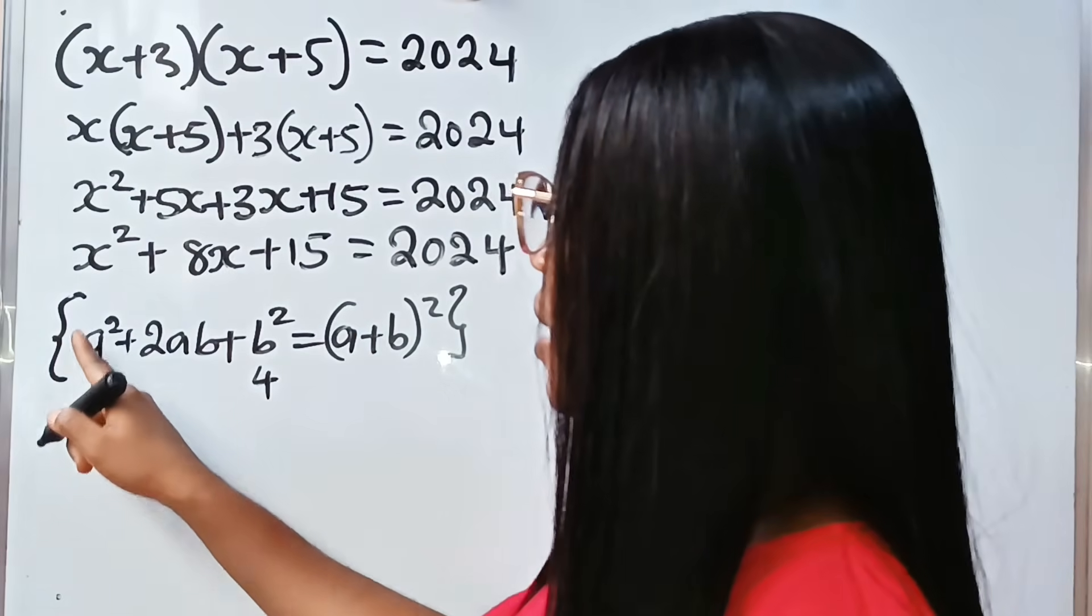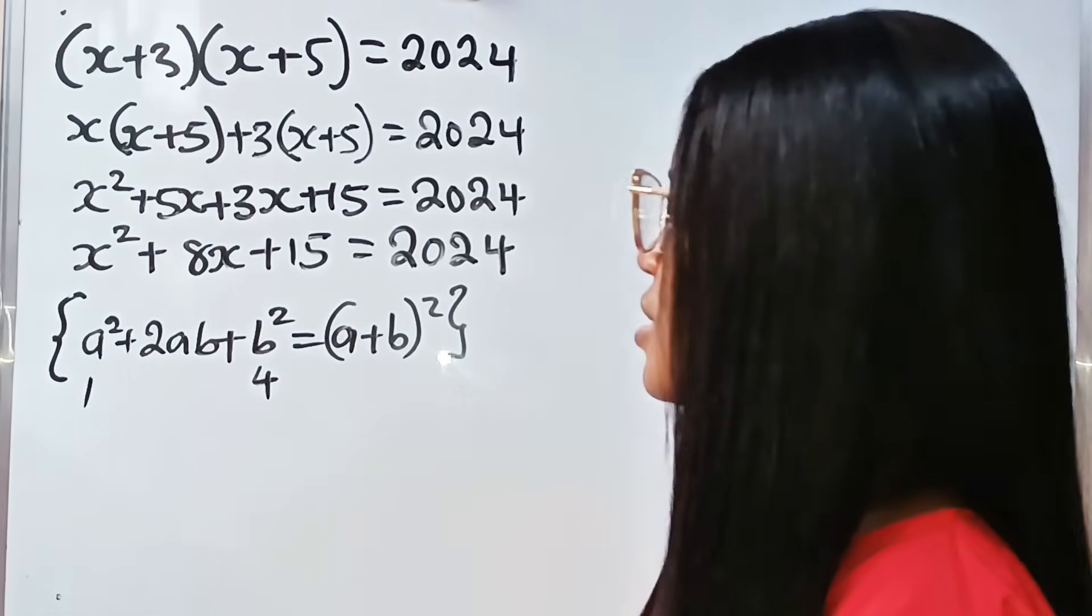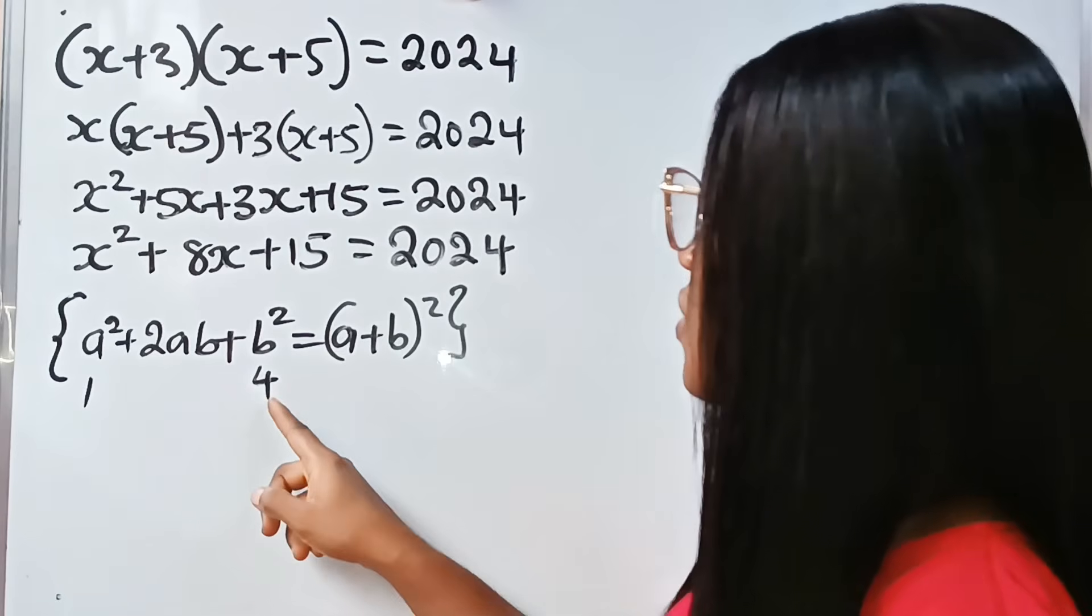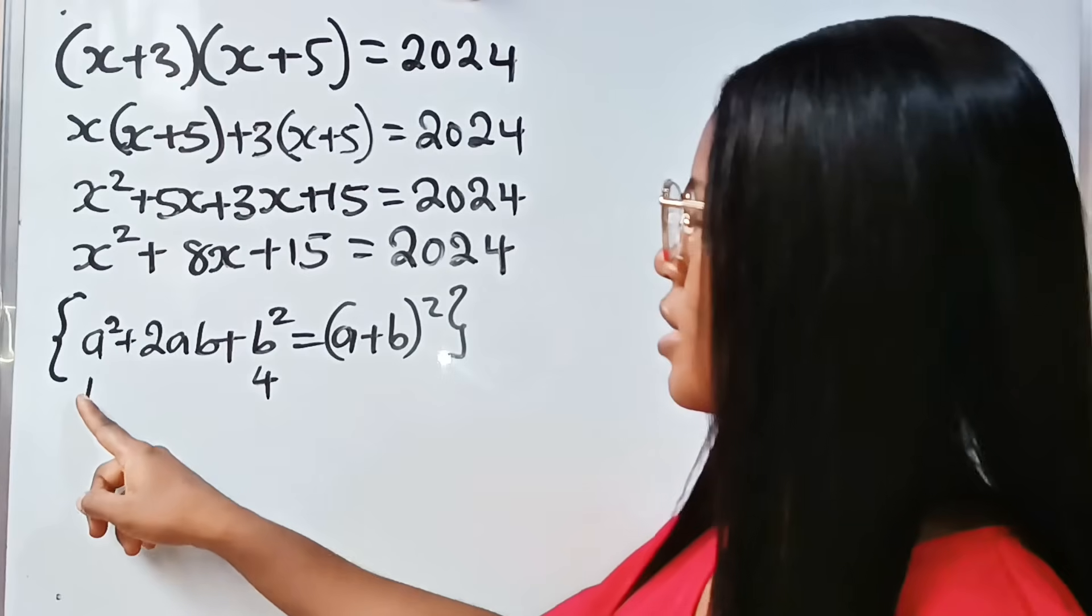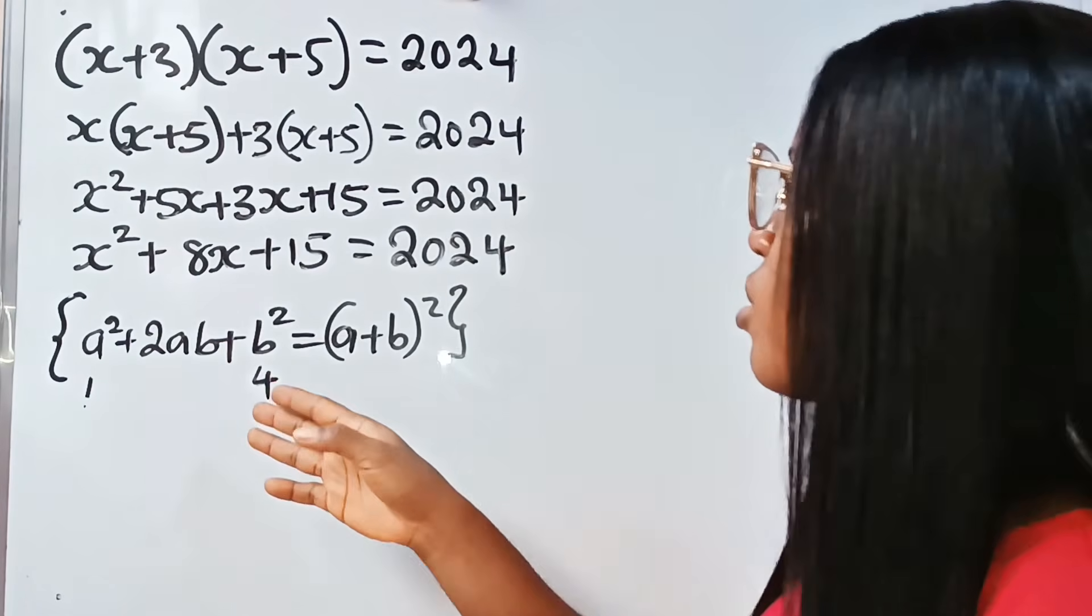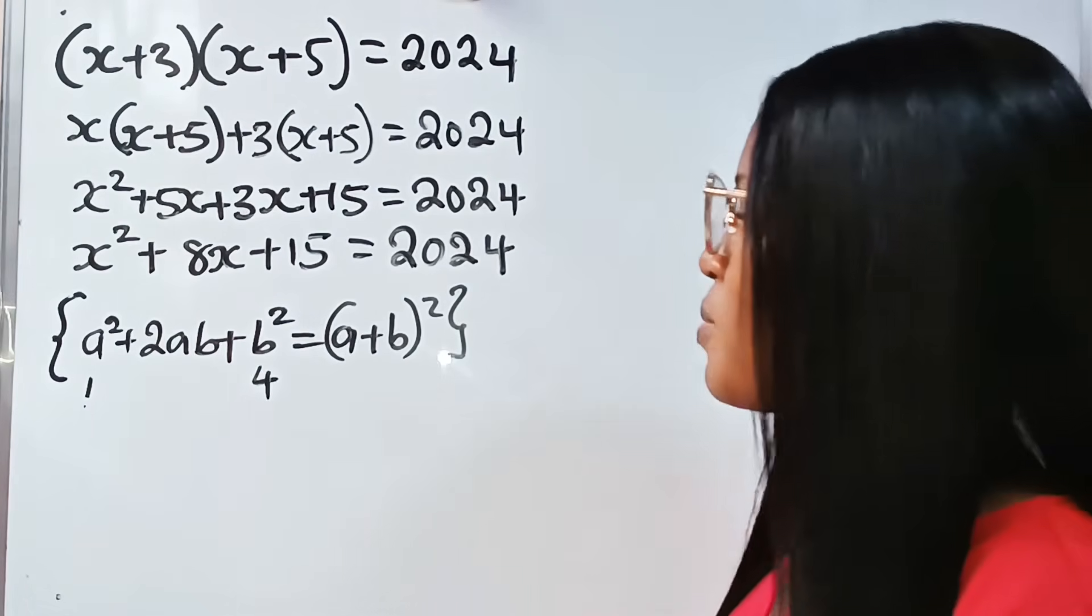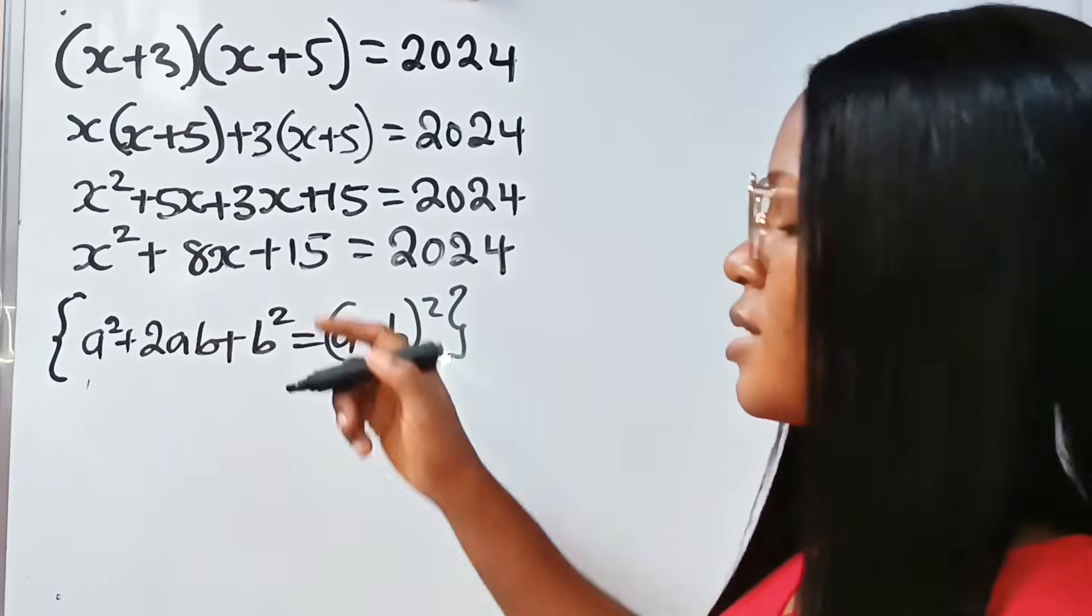My a will remain x, because 2 times 4 times x becomes 8x. So it means I can call this 16.